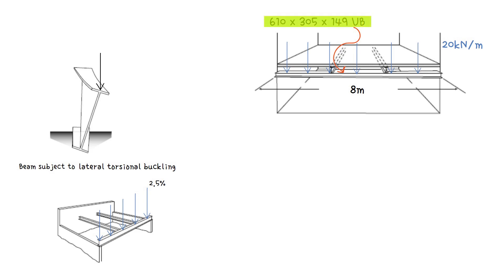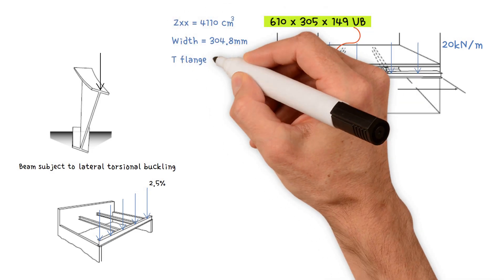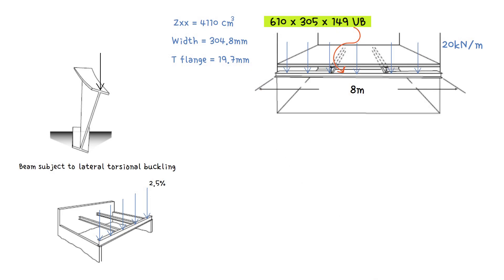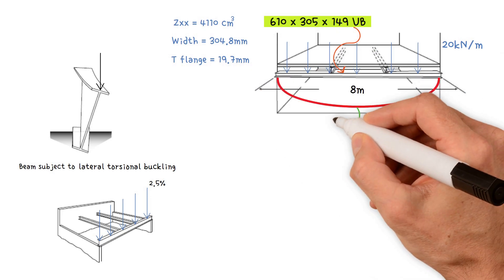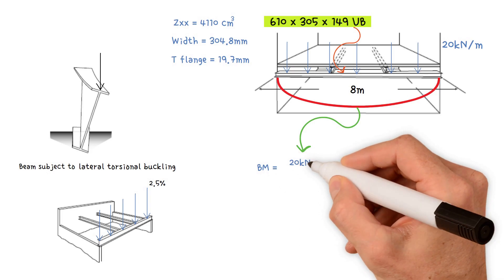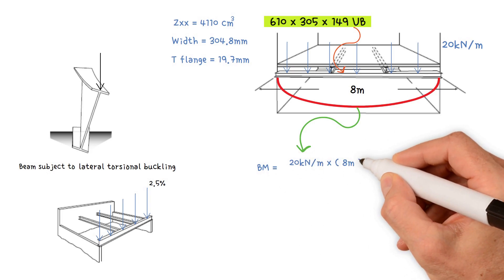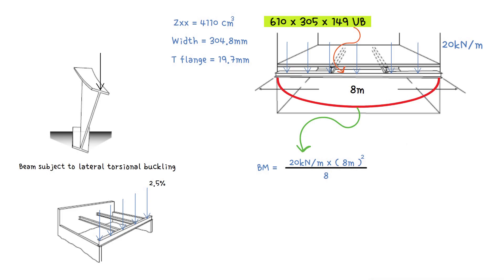For the 610 by 305 by 149 UB, we have the following properties. First, we need to work out the ultimate bending moment, which equals 20 kilonewtons per meter times span 8 meters squared, divided by 8. This gives us a value of 160 kilonewton meters.